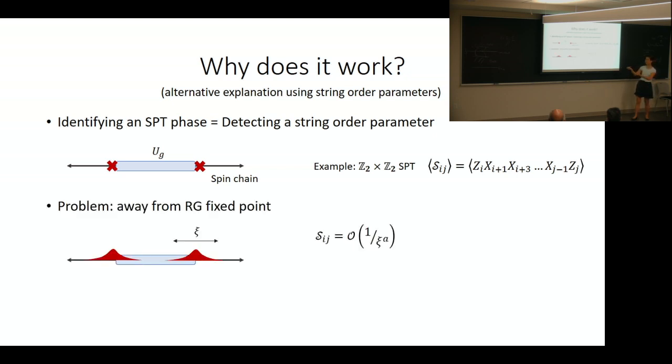Away from the fixed point state near criticality, your string order parameter might decay polynomially with the correlation length, so it might be hard to detect this non-zero expectation value.